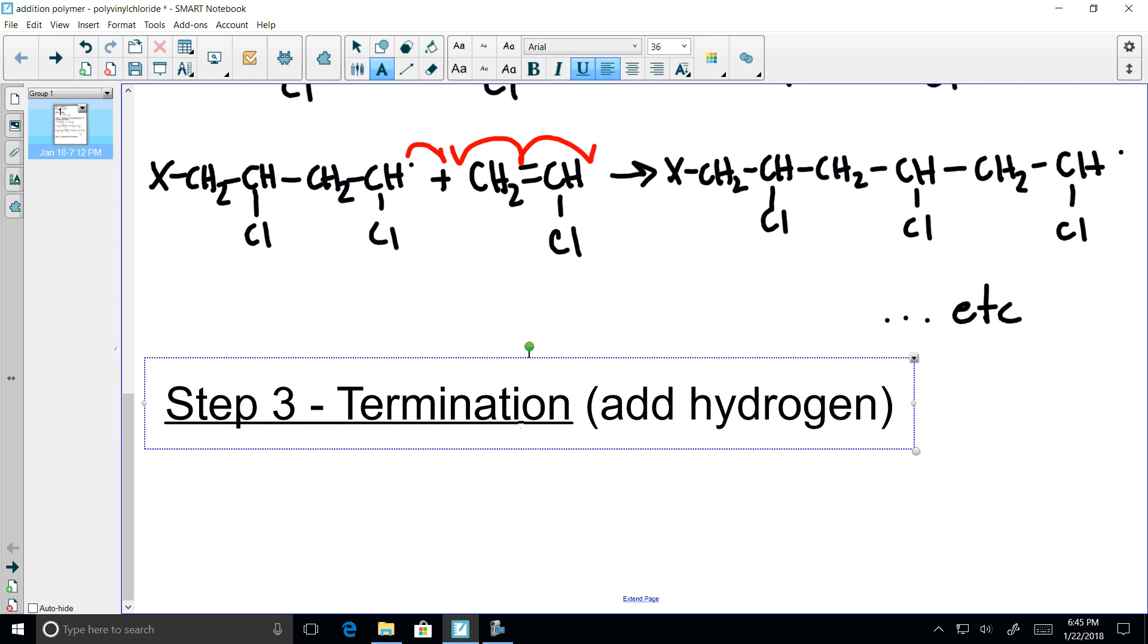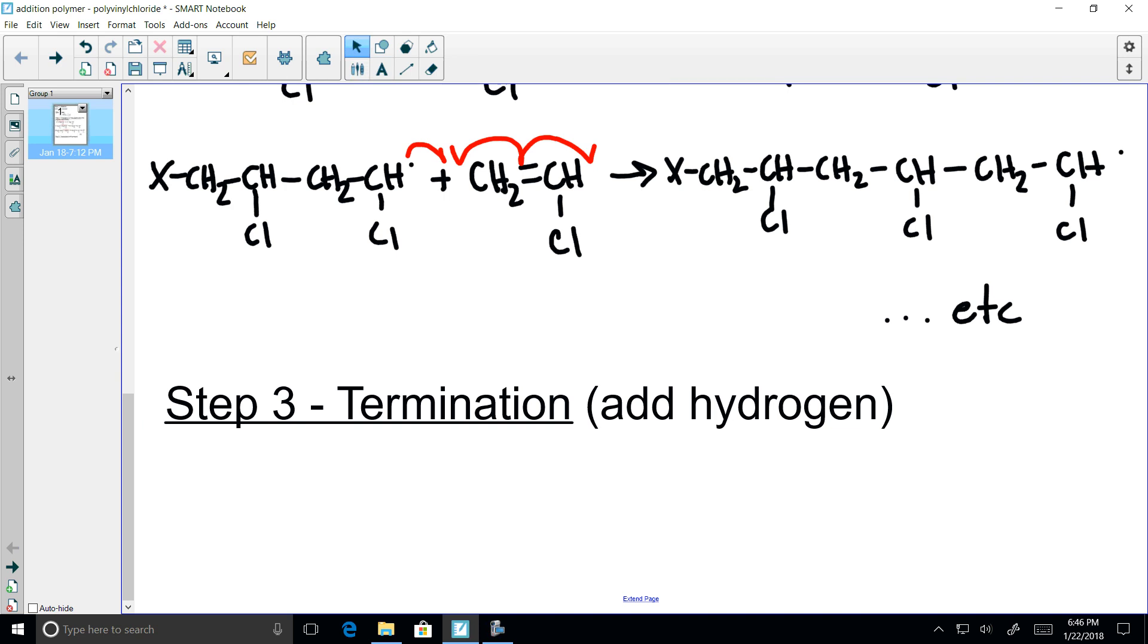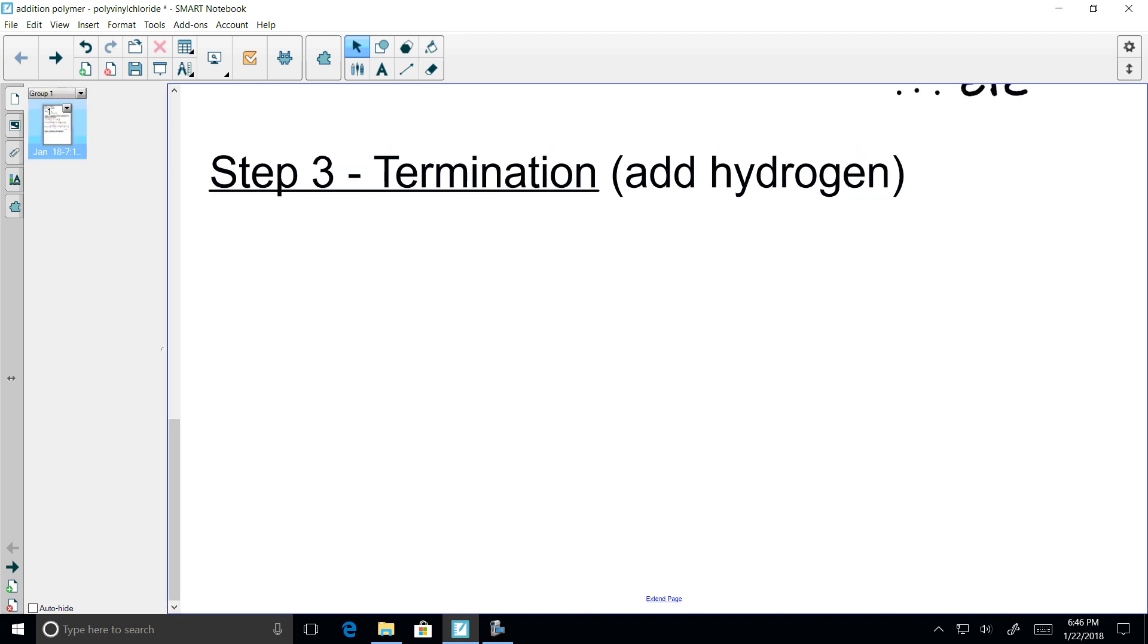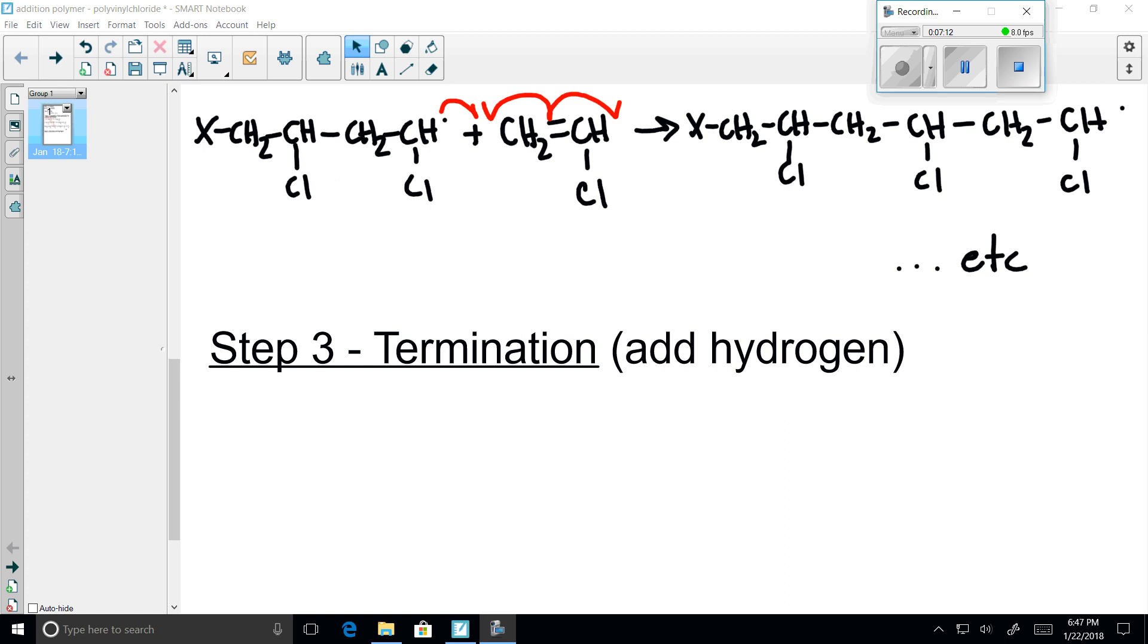If two polymer chains run into one another, the two free radical ends form a bond that joins together two growing polymer chains, and it self-terminates. Or, we can deliberately terminate the reaction by adding hydrogen.